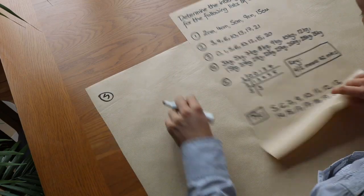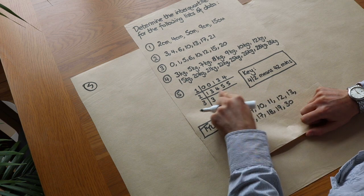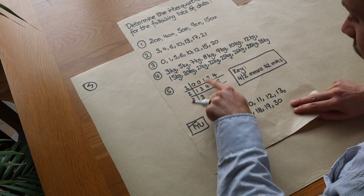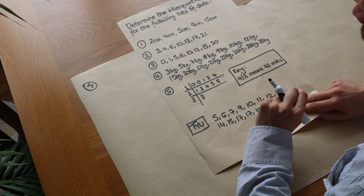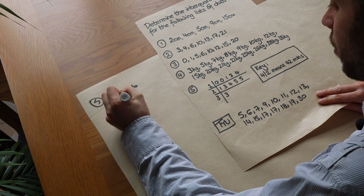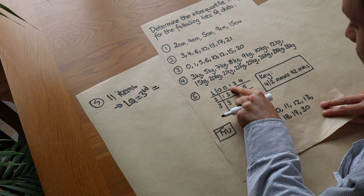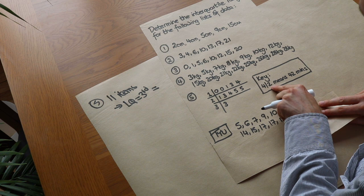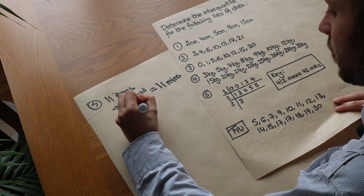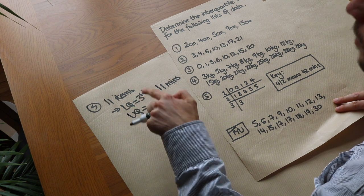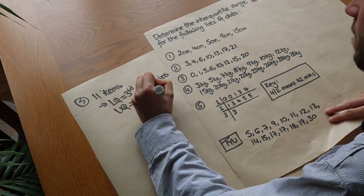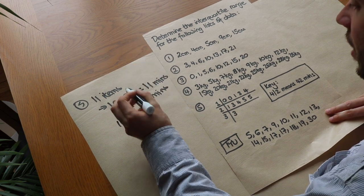For question 5, we've got a stem and leaf diagram — you may want to watch the video on that first if you haven't seen one before. Let's count the number of values: there are 11 values. Now 11 is one less than a multiple of four. So add 1 to get 12, divide by 4 to get 3. The lower quartile is the 3rd item, which is 11 minutes. The upper quartile is the 9th item — the median is the 6th — which is 25 minutes. So the interquartile range is 25 minus 11, which gives 14 minutes.